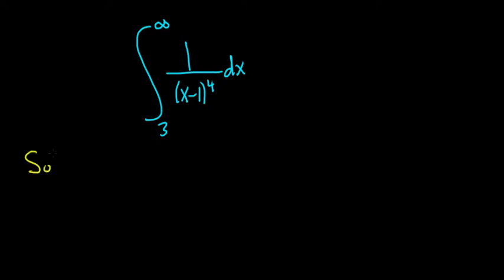So, solution. Whenever you have an improper integral with an infinity in one of the limits of integration, the first thing you can do is replace the infinity with a symbol. I like to use the letter b. And then we let b go to infinity. Then here we have the 3. Then here we have 1 over (x-1) to the 4th dx. So again, you can replace the infinity symbol with a letter and then just let that letter approach infinity.